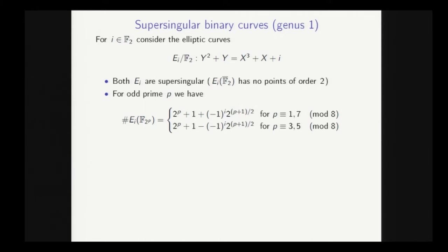So the history of supersingular curves in cryptography is quite an interesting one. Back in the early days of ECC, point counting algorithms were not as efficient as they are today. And so having a group order given explicitly like this made them very attractive for early adopters of ECC.